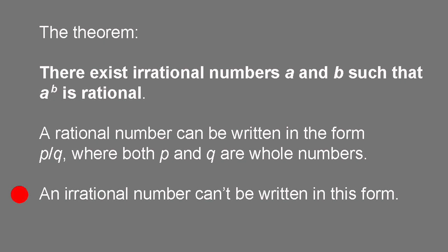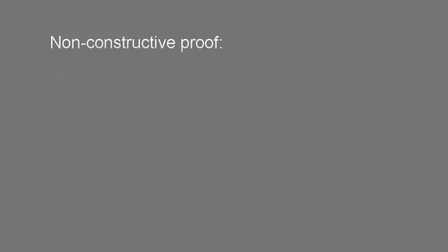The square root of 2, for instance, is an irrational number, and this can easily be shown, although I'm not going to do it here. Here's a non-constructive proof of the theorem I just stated. It was given by the Israeli mathematician and linguist Dov Jardin in 1953.